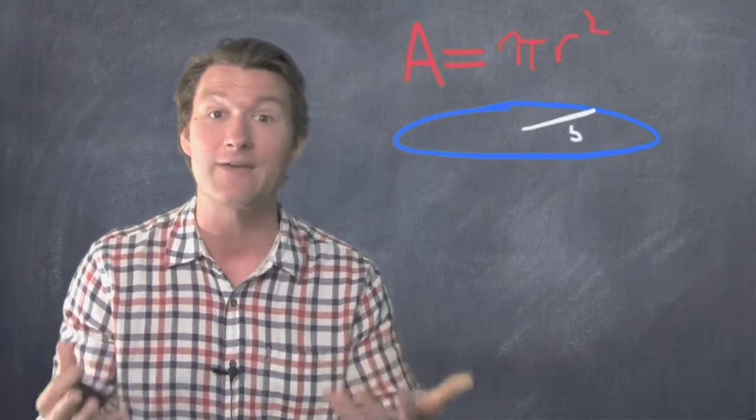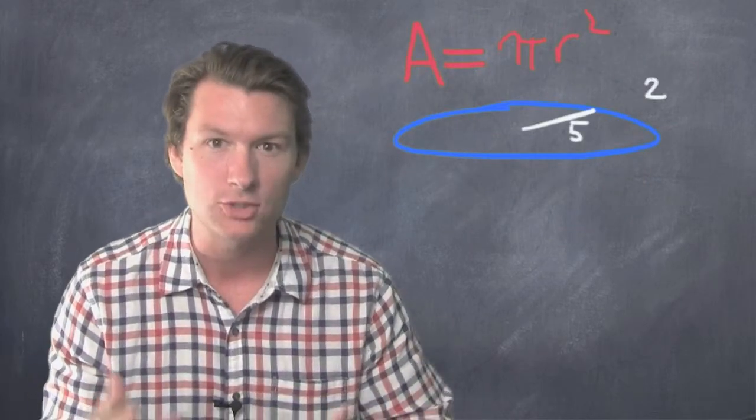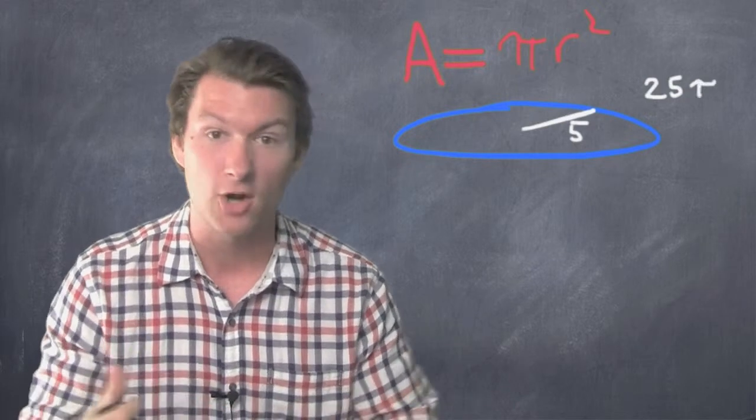Let's say we had a circle with a radius of five. What would the area be? Well, it would be 25 pi because it's pi r squared.